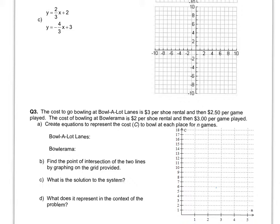Okay, in example C, equation number 1, we'll call that the first one, we have a y-intercept at 2 and we have a slope of 2 thirds, so rising 2, running 3